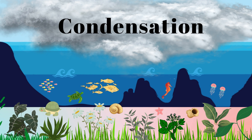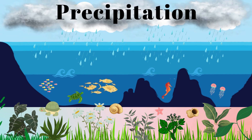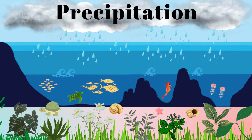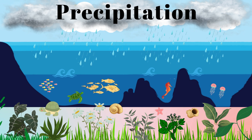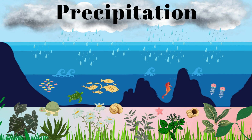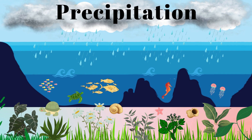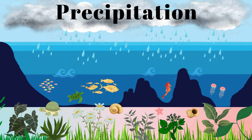When the clouds become heavy and full enough, they release the water as precipitation in the form of rain, snow, sleet, or hail. This is called precipitation. The precipitation then falls back to the Earth's surface and can either soak into the ground.